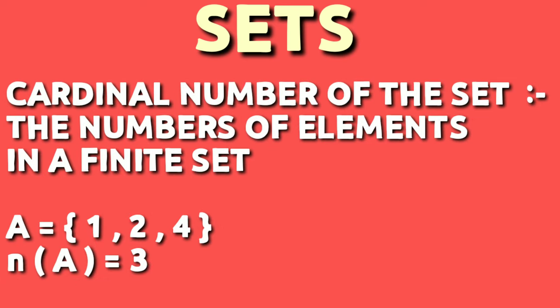Cardinal number of the set. The number of elements in a finite set is called the cardinal number of that set. A equals 1, 2, 4. Here the cardinal number is 3, meaning there are 3 elements in the set.